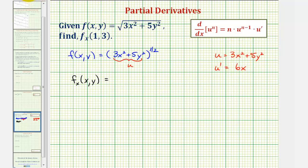So now if it's helpful, we can think of this as just u to the one-half. So to find the partial derivative with respect to x, we would multiply by one-half and then we'd have u to the power of one-half minus one, which would be negative one-half. But u is 3x² + 5y² to the negative one-half, and then times u prime, which we found as 6x.